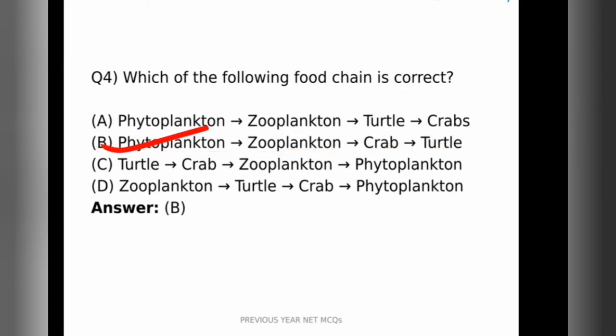Option B is the correct option. So the phytoplanktons are eaten by the zooplanktons, and zooplanktons are eaten by the crabs, and the crabs are finally eaten by the turtle. So turtles are omnivorous in nature. They both feed on herbivorous things, i.e. green plants and phytoplanktons, as well as crabs.